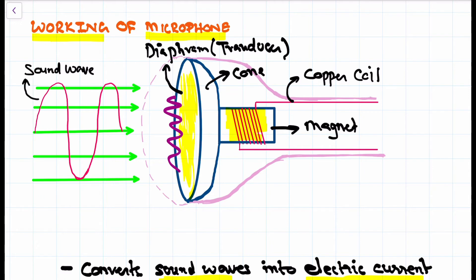The cone moves in and out, causing the copper coil to move backward and forward. Since it is attached to a permanent magnet, with the help of electromagnetic fields, it induces electric current. That electric current is then amplified.